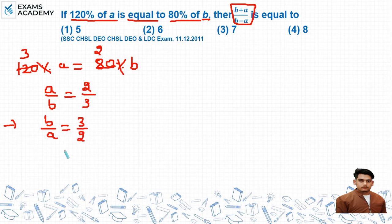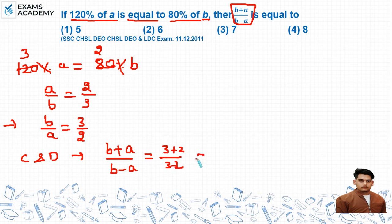Now if I apply componendo and dividendo here, I get b plus a over b minus a, which is equal to 3 plus 2 over 3 minus 2. This gives us 5 over 1, which equals 5, which is option number 1.